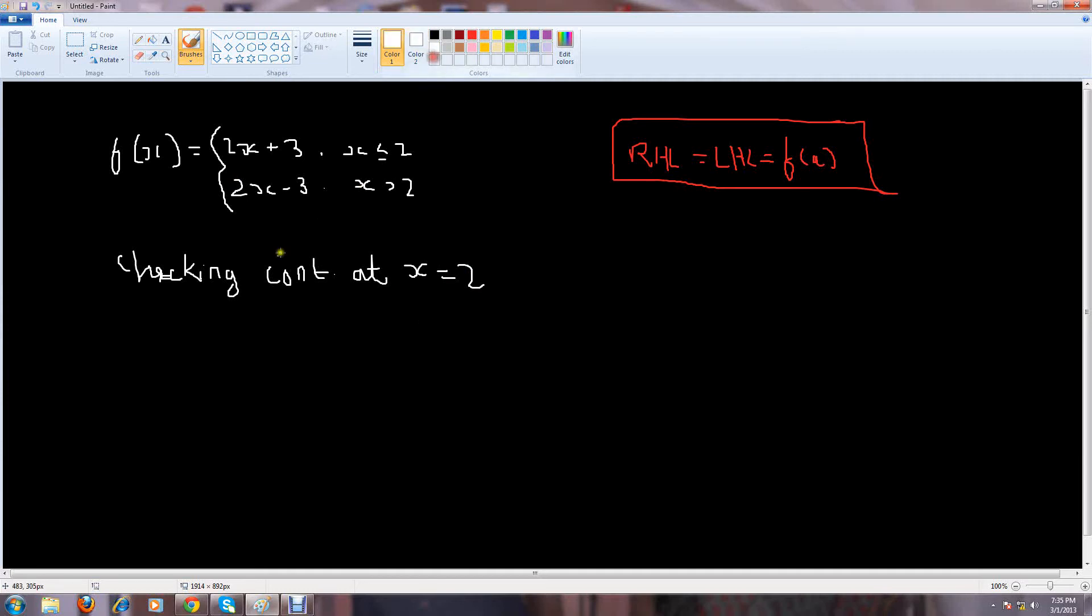So, first thing is your RHL. We'll be checking the RHL. Now, when you check RHL, you first write down limit x tends to 2 minus. Remember this. Here you'll write the point at which you're checking your continuity. And at the top, when you're talking about RHL, you'll always write a negative.